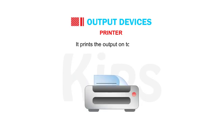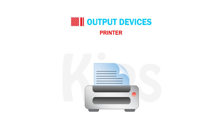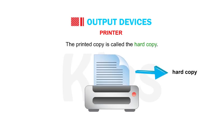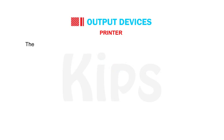The printer is an important part of a computer system. It prints the output onto paper. The printed copy is called the hard copy. The most commonly used printers are dot matrix, inkjet and laser printers. The dot matrix printer works like a typewriter and creates an impression by striking on the paper. It is very noisy and the least expensive. Dot matrix printers are not so common nowadays.